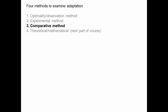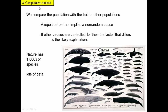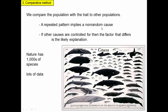Let's continue our adaptationist program by looking at the comparative method. When we're doing the comparative method, we compare a population with the traits to other populations, and a repeated pattern implies a non-random cause. In statistics, if there's a pattern to the data, then there's something non-random going on. And if other causes are controlled for or understood, then the factor that differs between groups with different versions of a trait is the likely explanation. We can look at populations or species and do analyses like this.